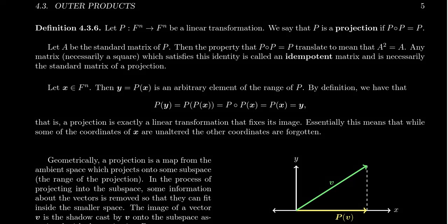Let p be a linear transformation from Fⁿ to Fⁿ. We say that p is a projection if p composed with p is equal to p. Think about what that means: if we were to apply the transformation twice, it's as if nothing happened the second time. It doesn't mean that nothing happens whatsoever — what we're saying is that the second iteration doesn't do anything.